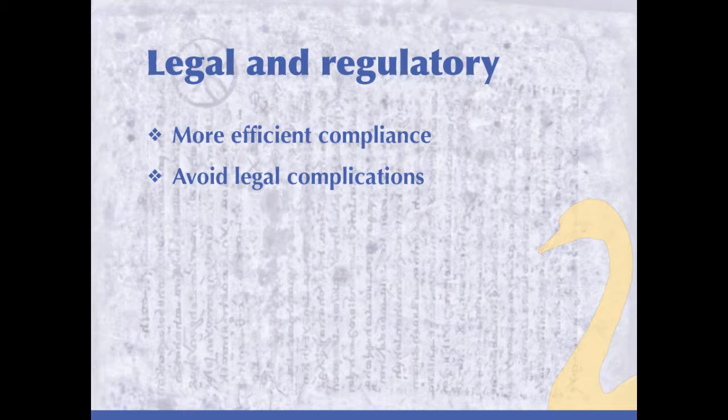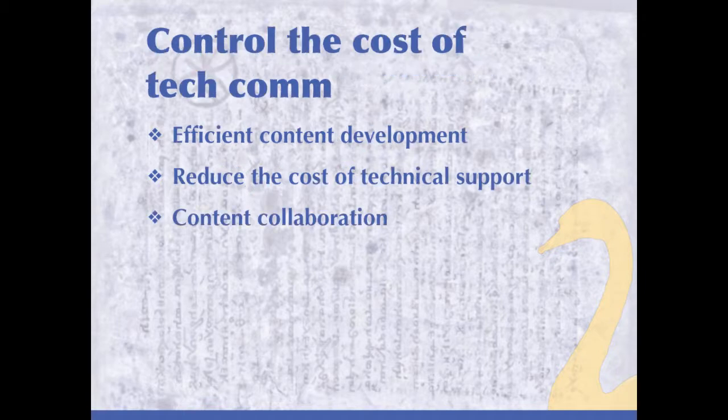On the cost control side, we basically have three factors that can help you control tech comm costs: more efficient content development and delivery, a reduction in the cost of tech support, and content collaboration — which can break down silos and content duplication and ensure that information is created once, not once by doc and once by training and once by tech support and once by the proposal group and once by sales. That is not efficient, and better collaboration can help.